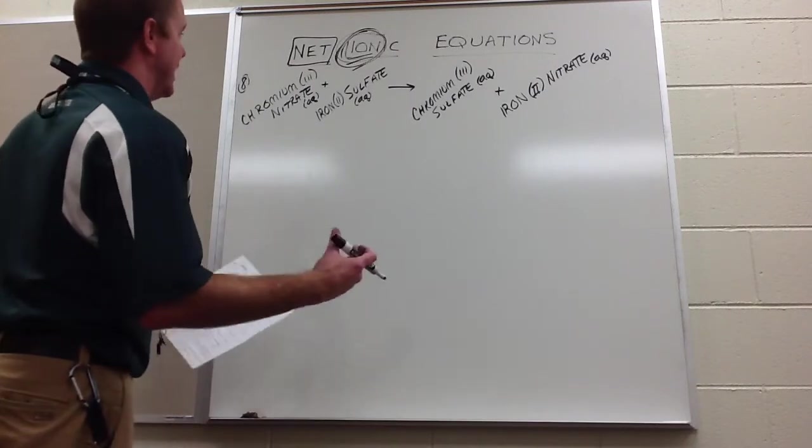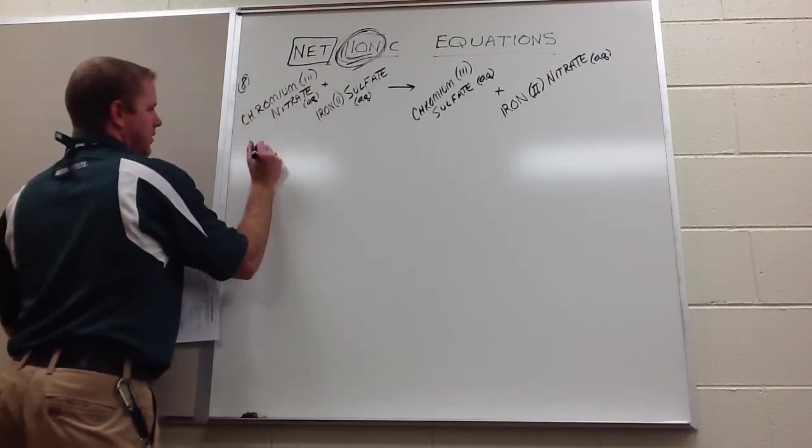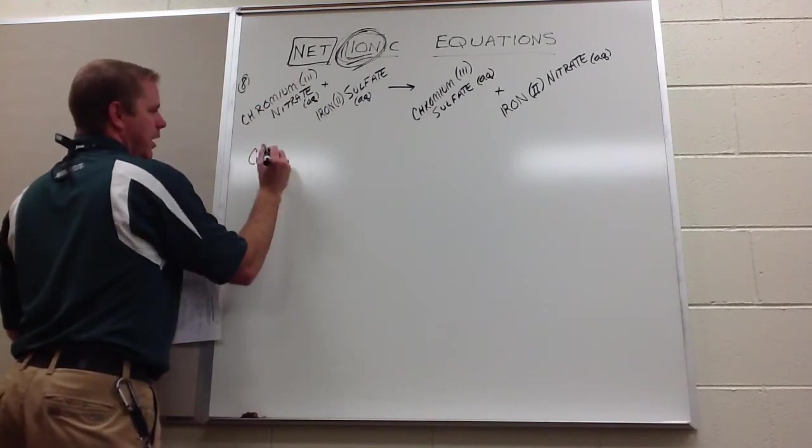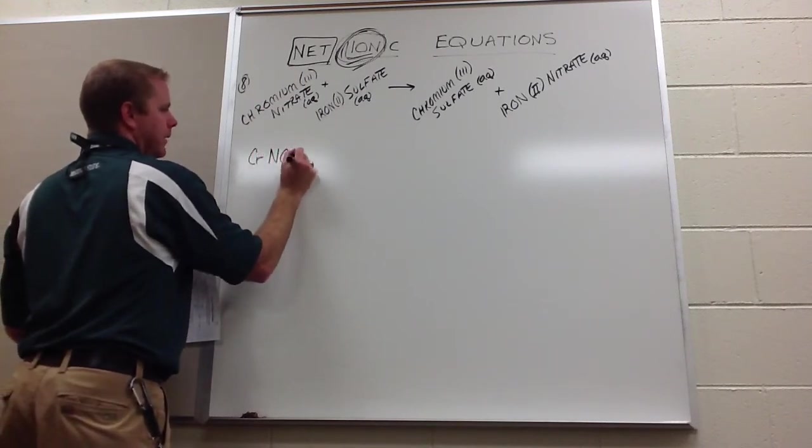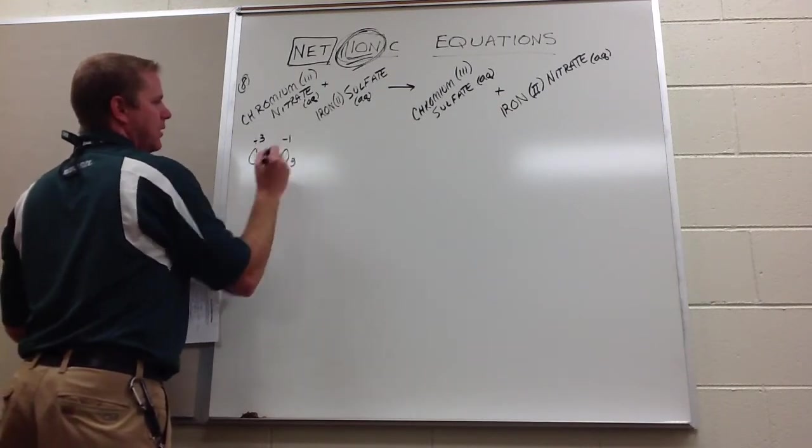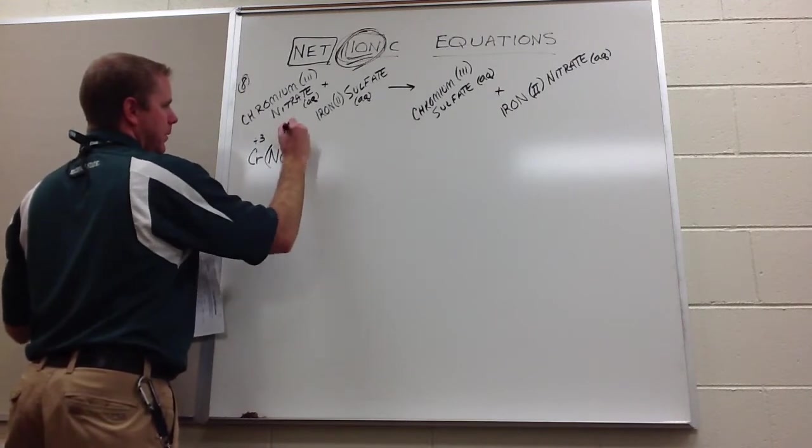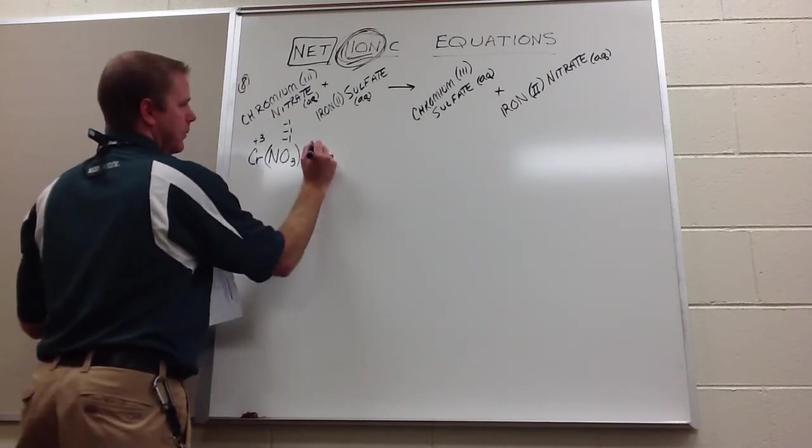The first thing we have to do is write out what it is. So chromium three and nitrate. What does that mean? It means we have Cr and NO3. Now chromium is three so it's plus three. Nitrate always is minus one. Therefore, there are three of them, negative one, negative one, negative one.